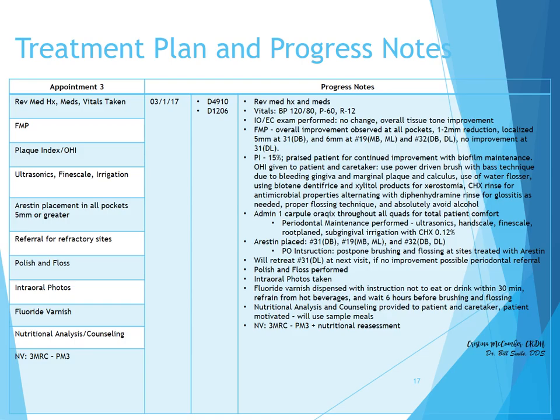For total patient comfort, we use one carpule and perform periodontal maintenance with ultrasonics, hand scaling, fine scaling, root planing, and subgingival irrigation. At this appointment, we can place restin at sites 5mm and above — at 31 distal buccal, 19 mesial buccal and mesial lingual, and number 32 distal buccal and distal lingual — with post-op instructions to postpone brushing and flossing at the treated sites.